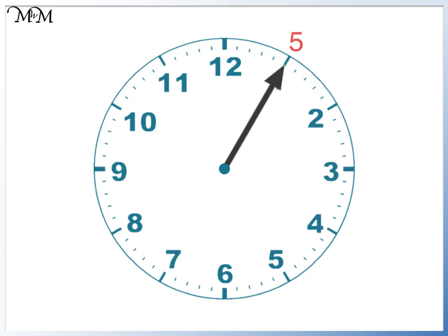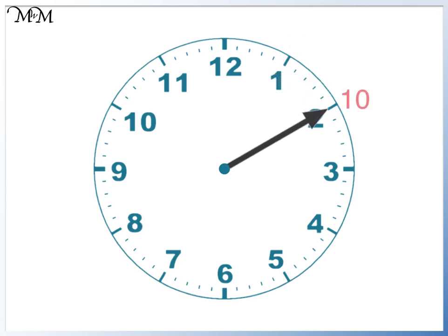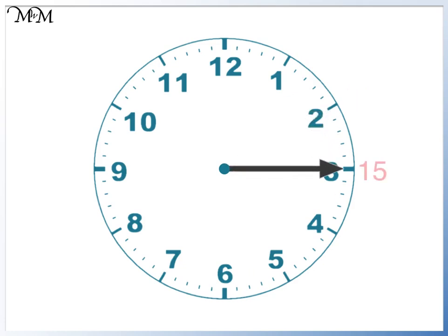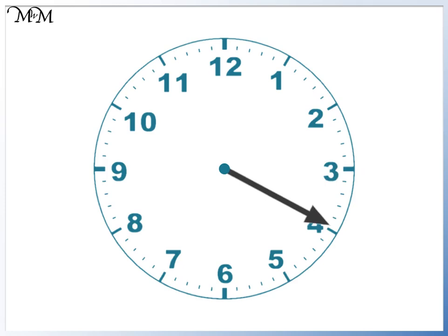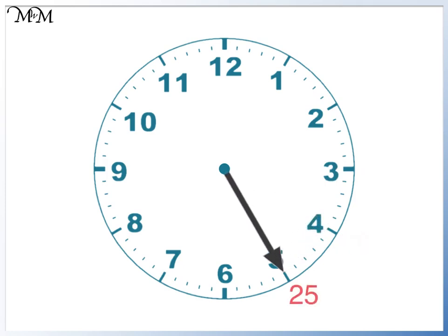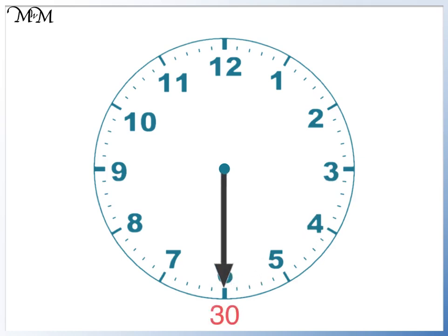So each large number on the clock is another five minutes. We can count up in fives: five, ten, fifteen, twenty, twenty-five, thirty.